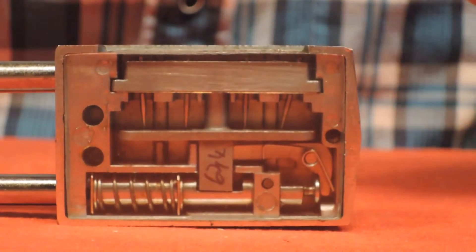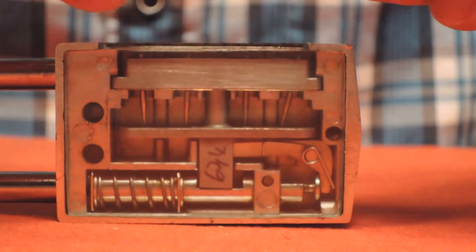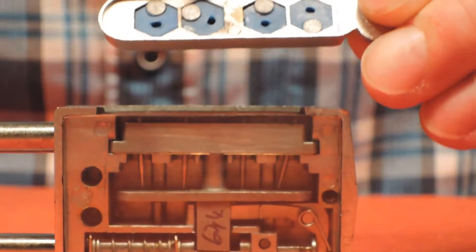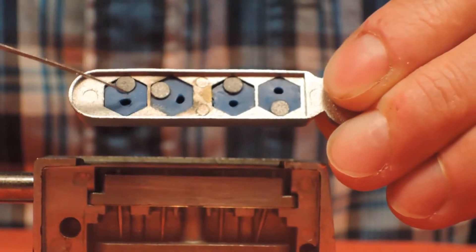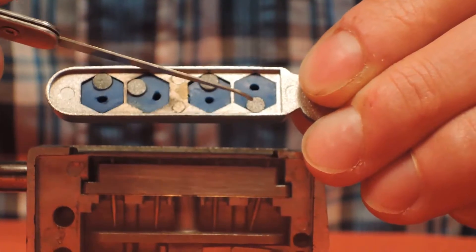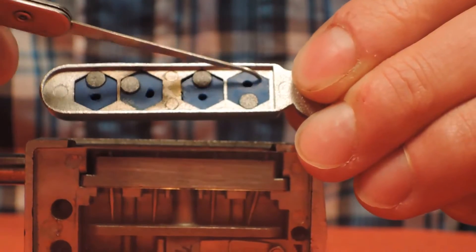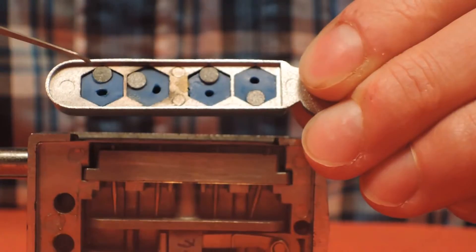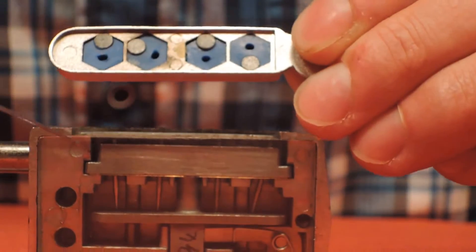If we remove the top part of the key, you can see inside there are four small magnets. They can be positioned in one of six places. These magnets will pull on the pins that pivot inside of the lock.